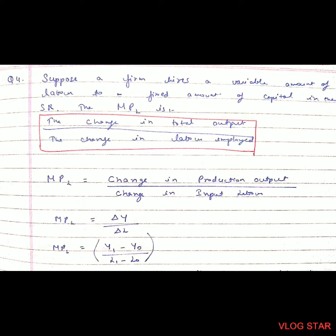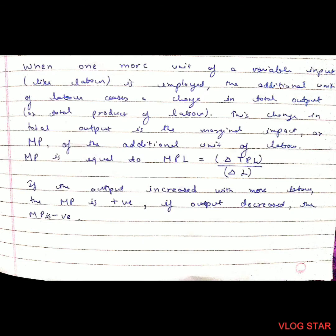This can be further written as (Y₁ − Y₀) / (L₁ − L₀). When one more unit of variable input like labor is employed, the additional unit causes a change in total output or total product of labor. This change in total output is the marginal product (MP) of the additional unit of labor. If output increases with more labor, MP is positive; if output decreases, MP is negative.